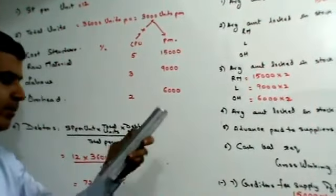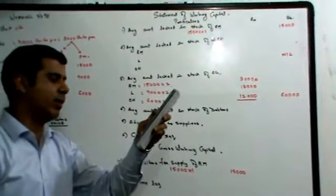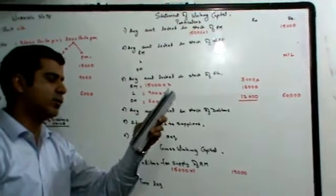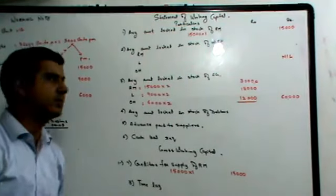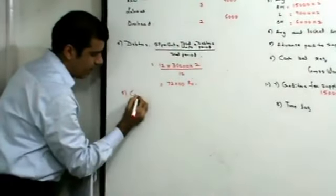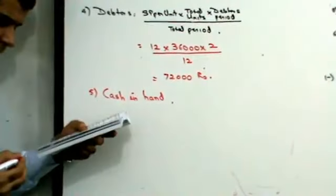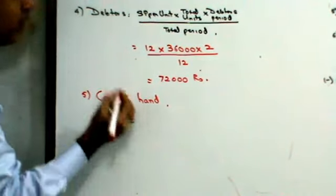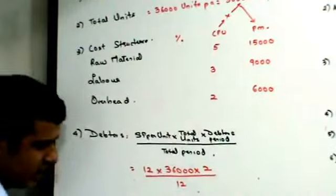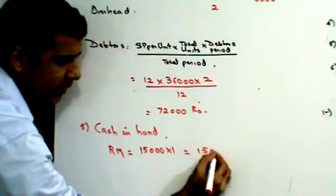Let's leave this here for the timing. The company intends to maintain a cash in hand and bank equal to 1 month raw material, 2 month labor and 3 month overheads. You will have to make a working note for this. Cash in hand, specifically they have told you, is to be equal to 1 month raw material. So raw material, we know is 15,000. So this is 15,000 into 1, that's 15,000.